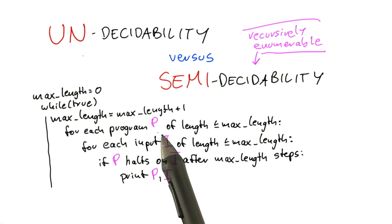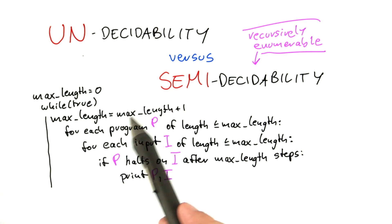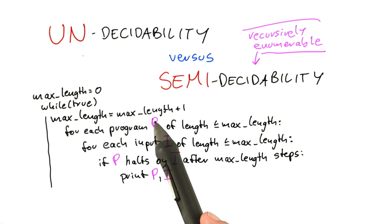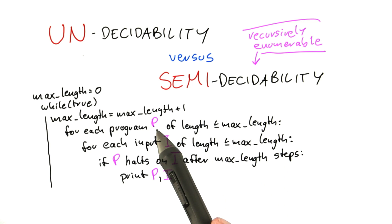enumerates all programs of length at most max_length. Now, if you fix this max_length here, there is a huge number of programs that have a length at most max_length, but it's finite. It's huge but finite. And the same goes for the inputs.